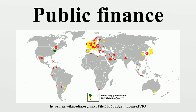Government operations are those activities involved in the running of a state or a functional equivalent of a state for the purpose of producing value for the citizens. Government operations have the power to make and the authority to enforce rules and laws within a civil, corporate, religious, academic, or other organization or group.